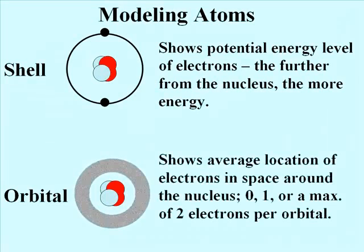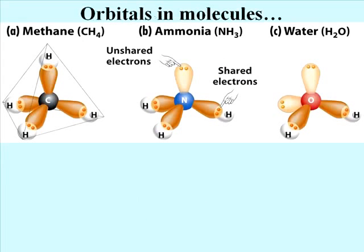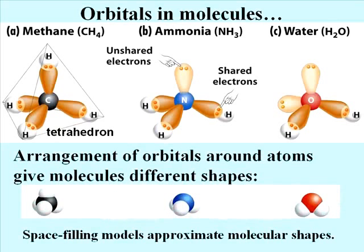In this illustration, electrons are shared between atoms in these covalent compounds in orbitals that give the molecules their shapes. The space filling models along the bottom of the slide emphasize the different molecular shapes.